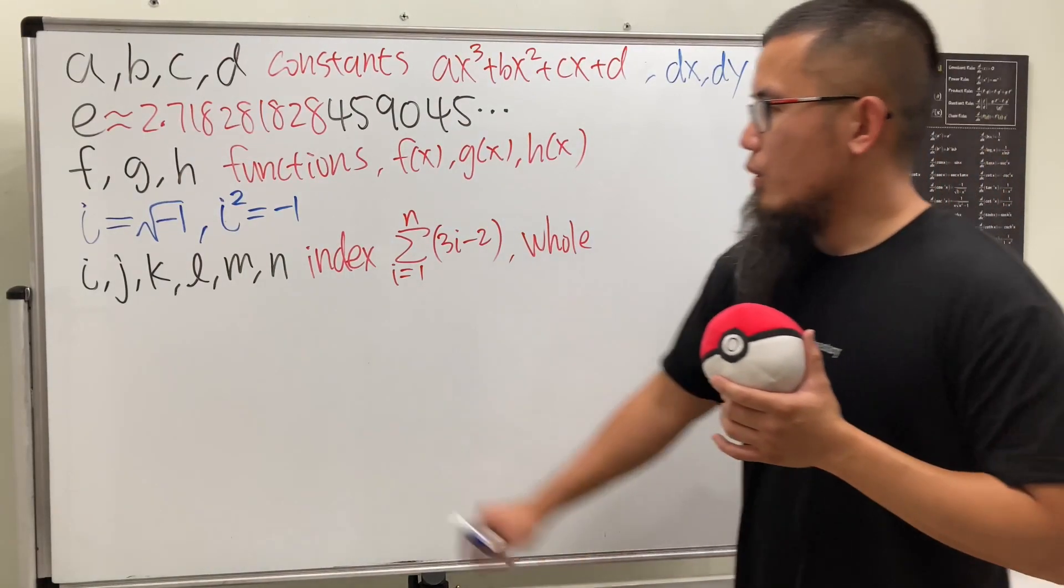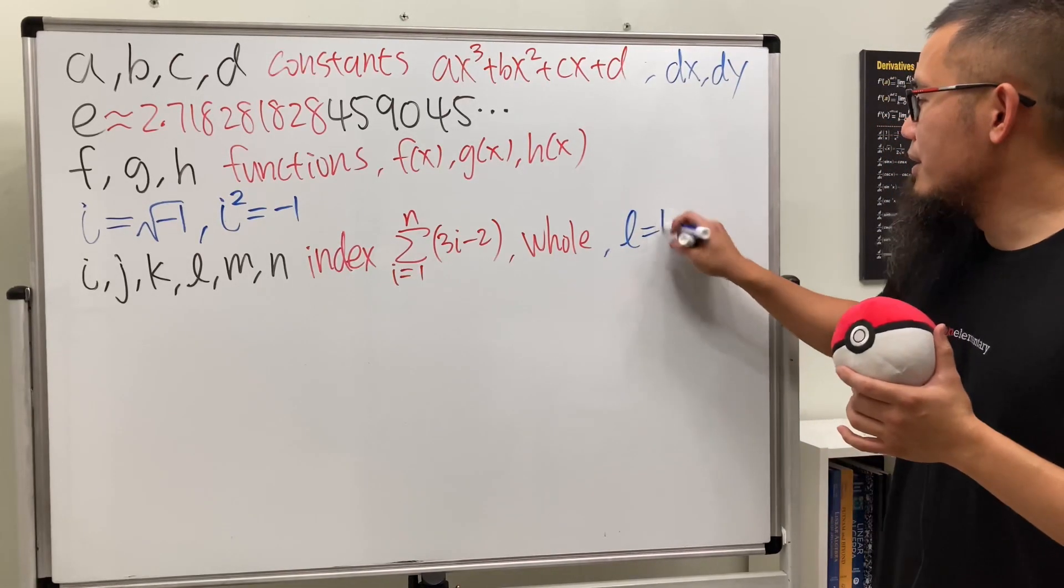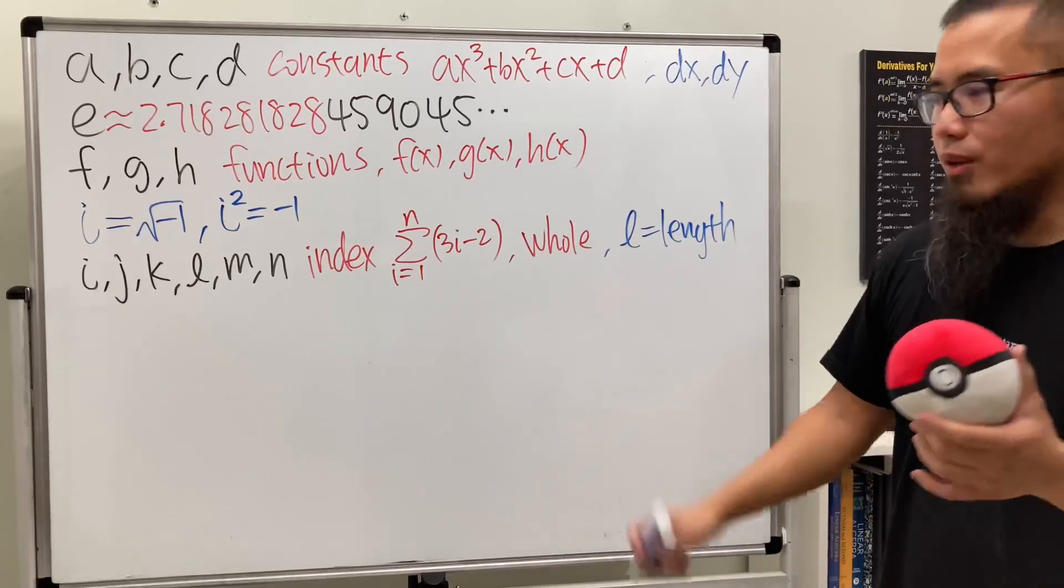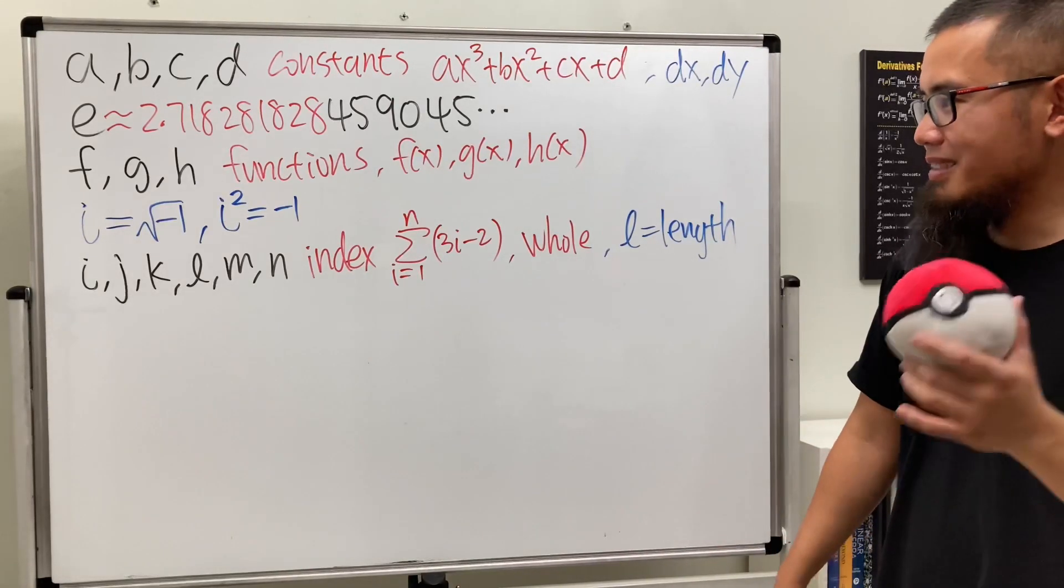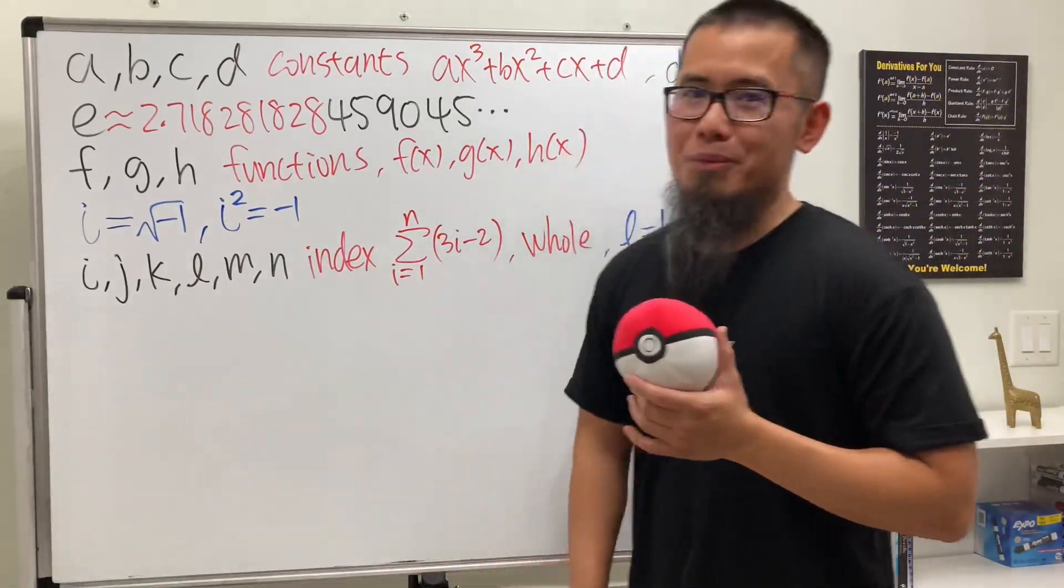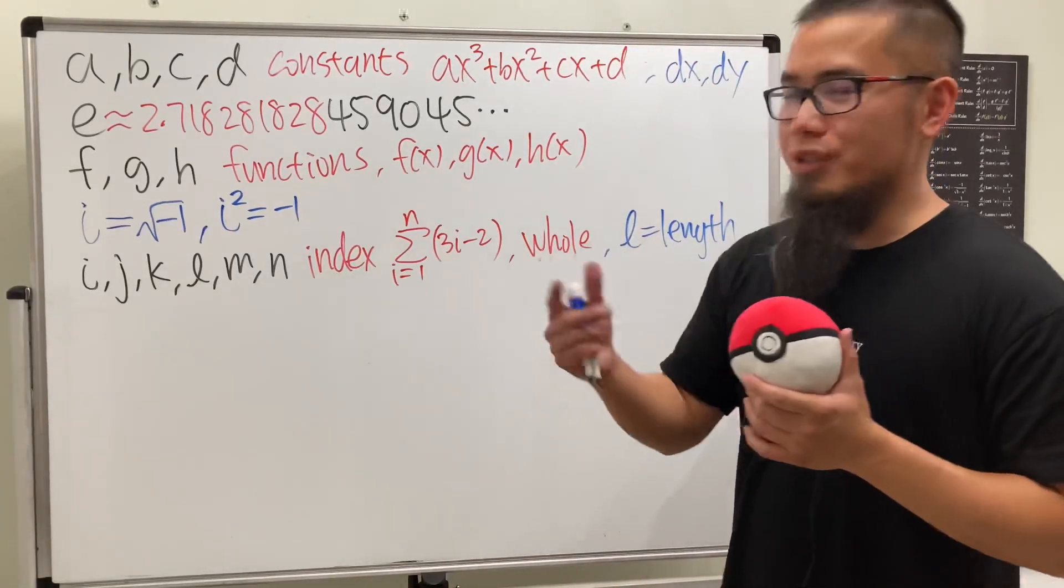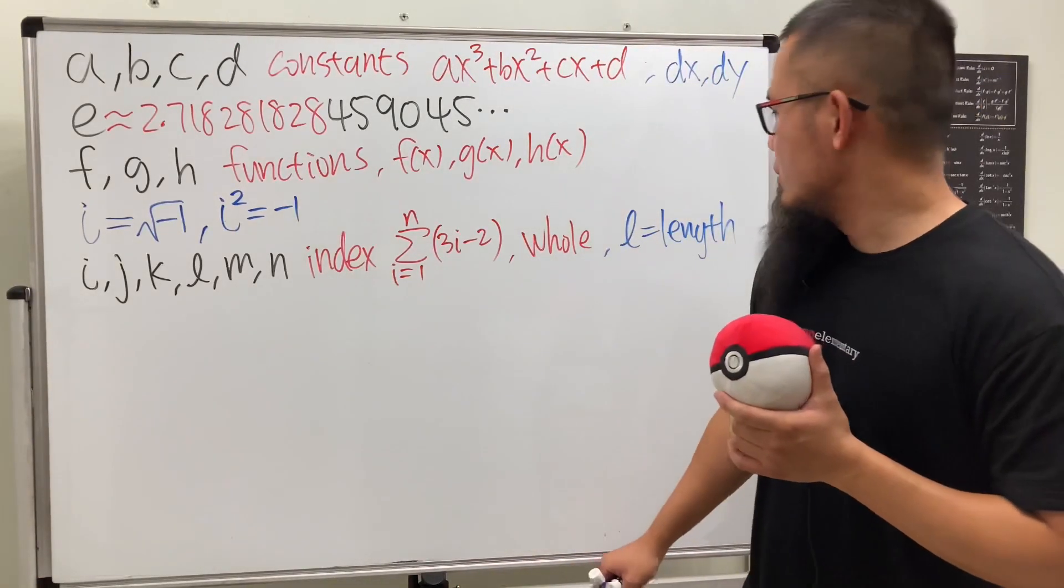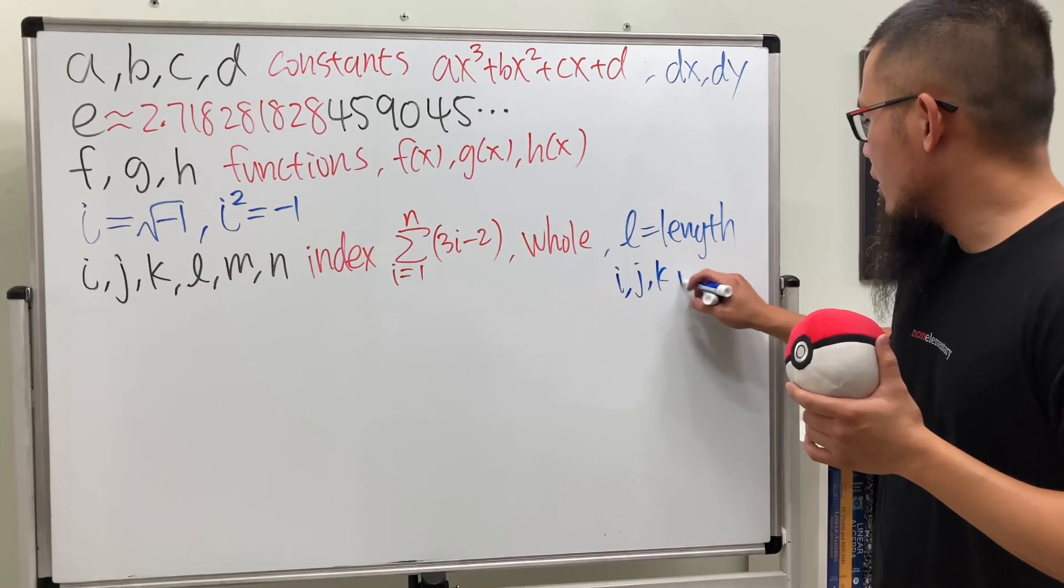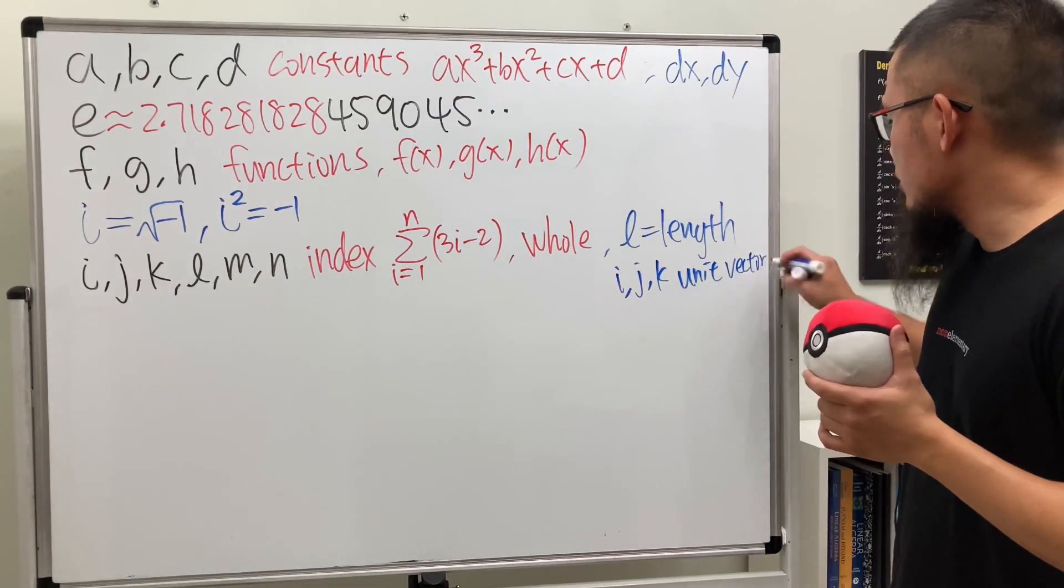That's for index, and usually when I see this I make sure they are for whole numbers. Honorable mention: l is usually for length, the length of a rectangle or curve. m and n look like whole numbers to me. i, j, k also for cross product, the unit vectors. I should write that down: i, j, k the unit vectors, the directional vectors.